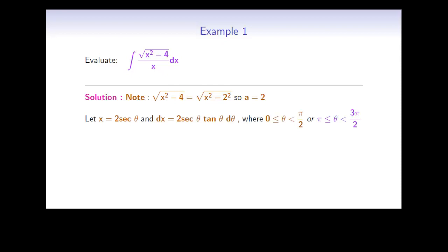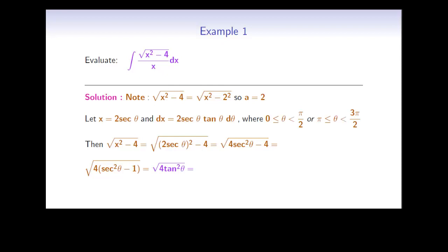We work with theta in one of the specified intervals, which might change depending on which textbook you're using. We can simplify the square root of x² minus 4 by replacing x with 2 secant theta, factoring out a 4 to get the square root of 4 tan² theta, since secant² theta minus 1 equals tan² theta. This gives 2 times the absolute value of tan theta. On these specific intervals, tan theta is positive, so we don't need the absolute values: the square root of x² minus 4 simplifies to 2 tan theta.